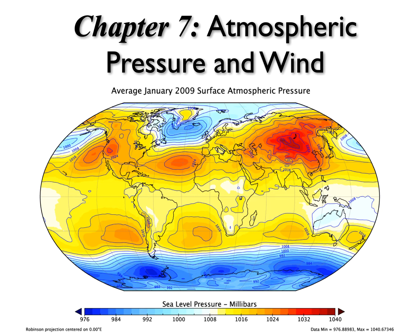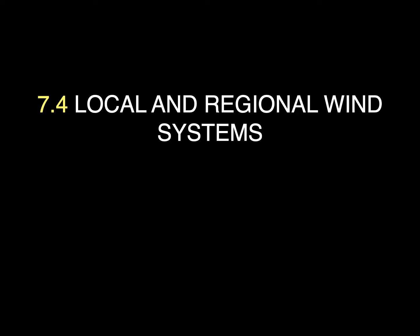Chapter 7: Atmosphere, Pressure, and Wind. Section 7.4: Local and Regional Wind Systems.